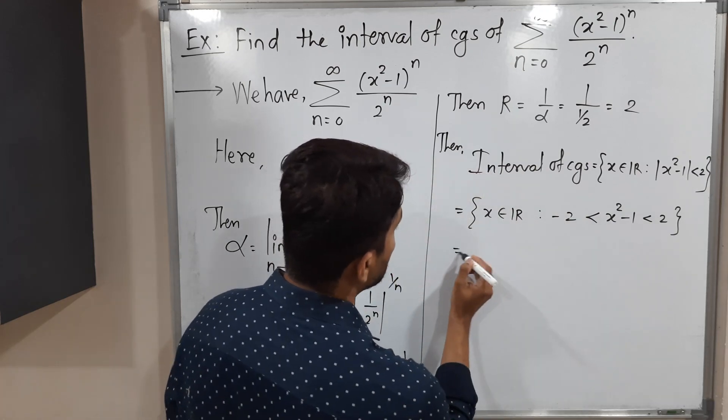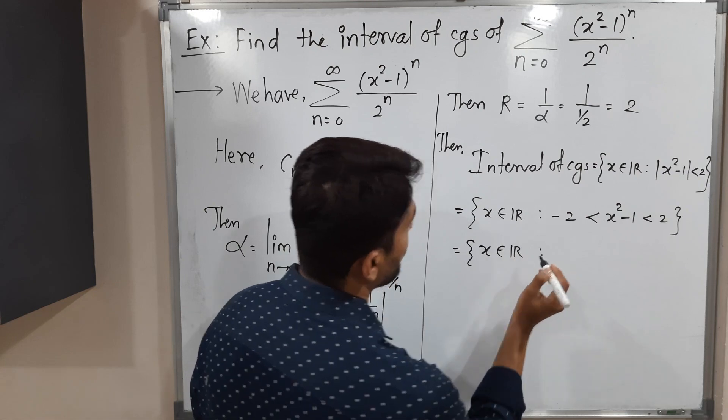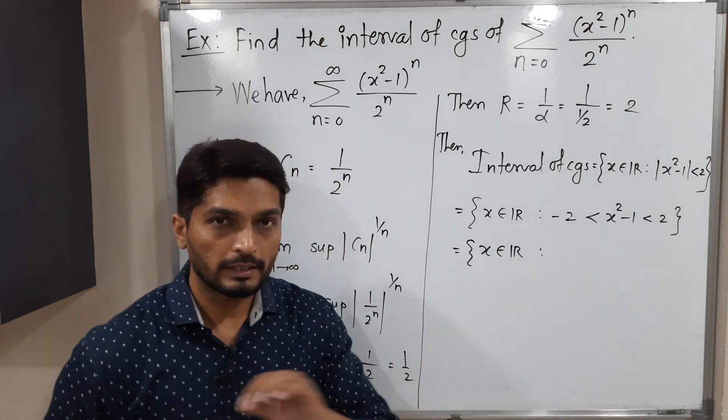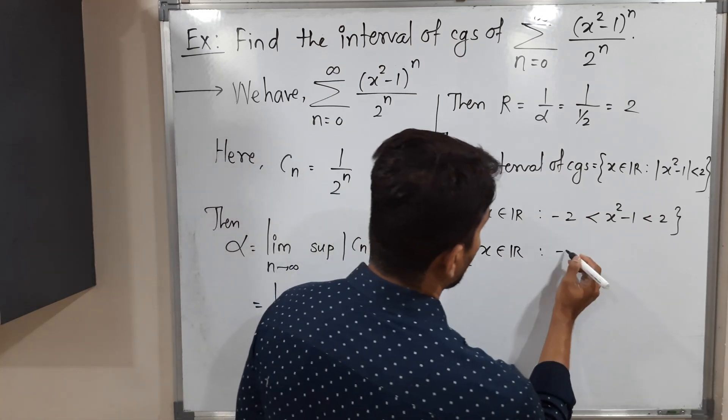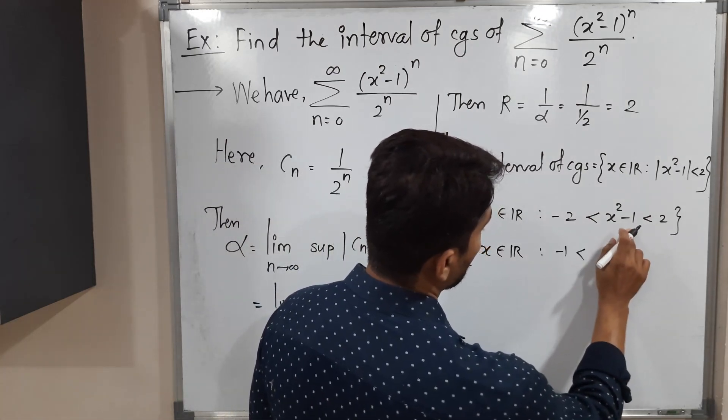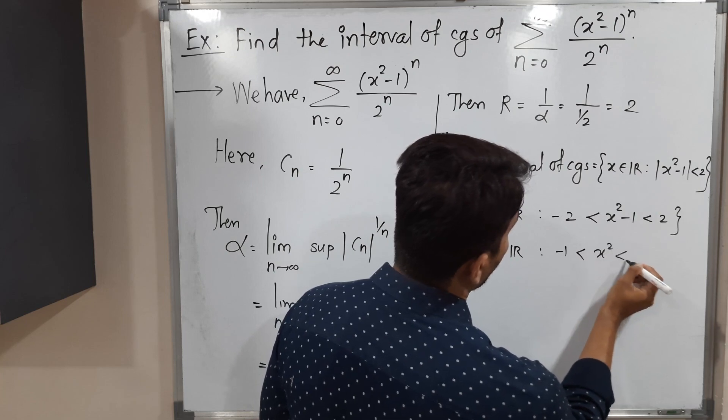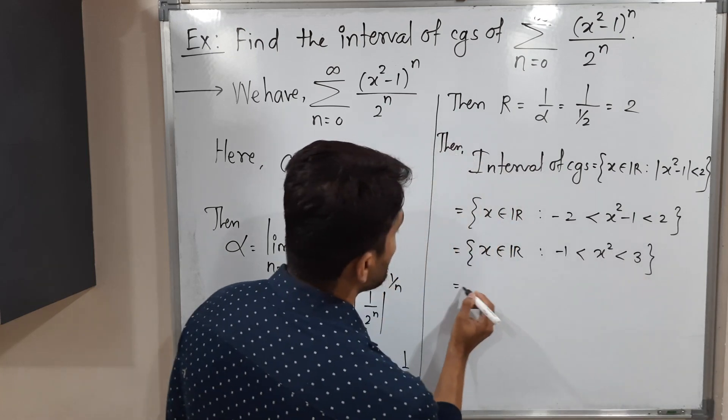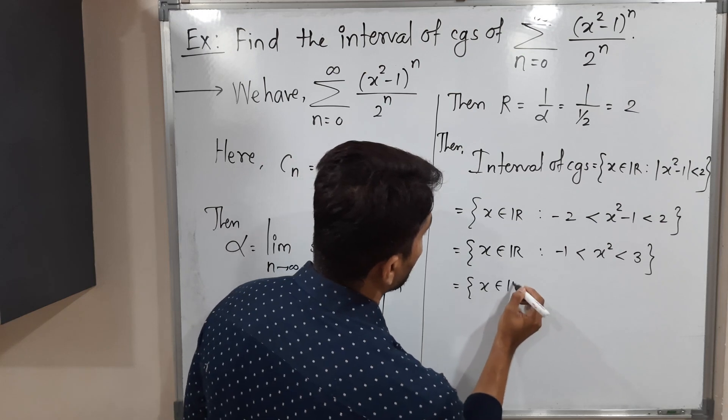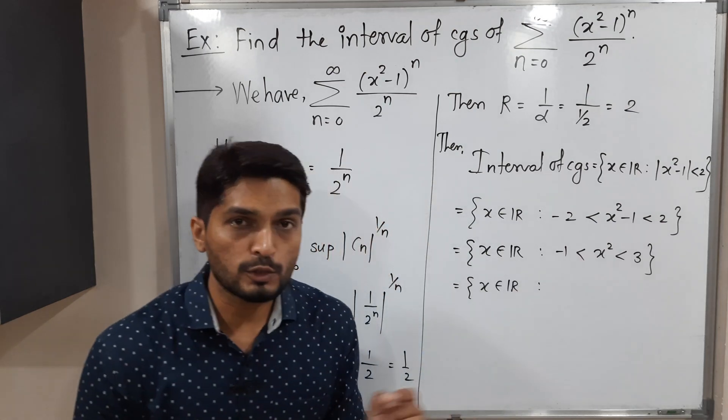I will copy this one as it is: x belongs to R. I am going to add 1 to all these three sides. If I add 1, minus 1 plus 1 will get cancelled, and if you add 1 here we will have 3. So we get -1 < x² < 3.